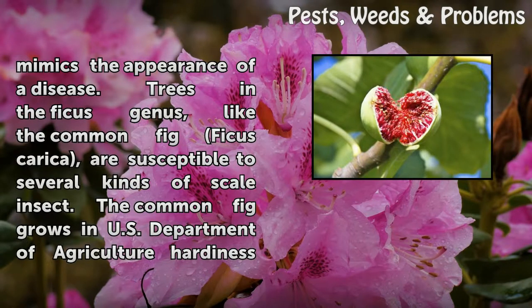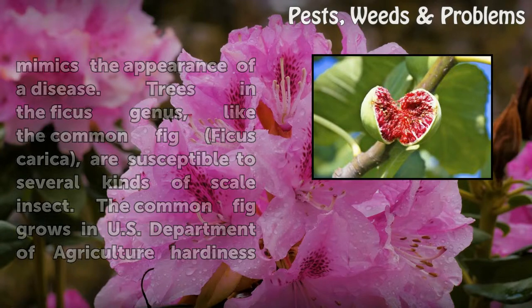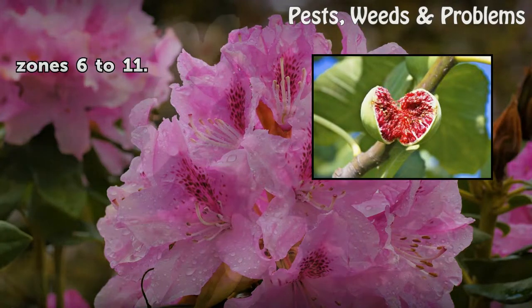Trees in the Ficus genus, like the common fig Ficus carica, are susceptible to several kinds of scale insect. The common fig grows in U.S. Department of Agriculture hardiness zones 6 to 11.